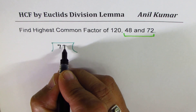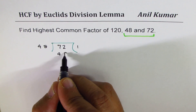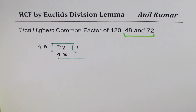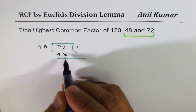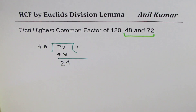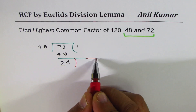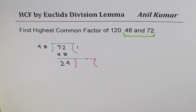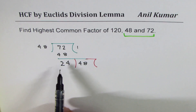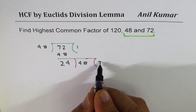72 is the dividend and 48 is the divisor. It goes 1 time — 48 times 1 is 48. The remainder: 12 take away 8 is 4, 6 take away 4 is 2 — so we get 24 as the remainder. Now this remainder divides into 48, the previous divisor.